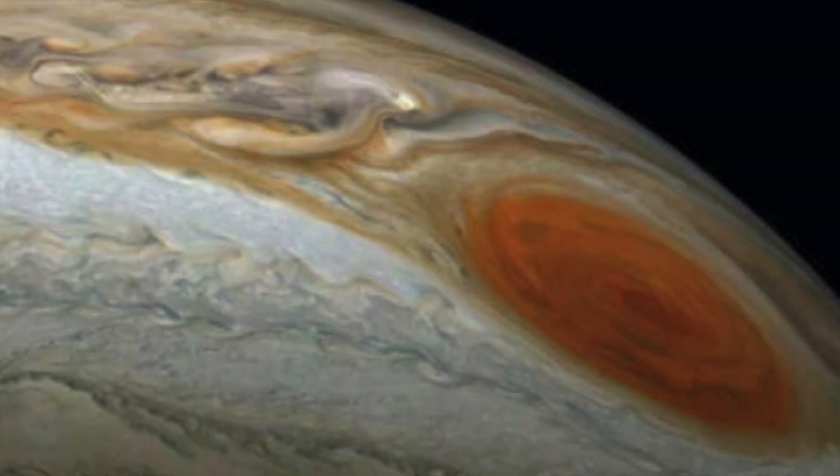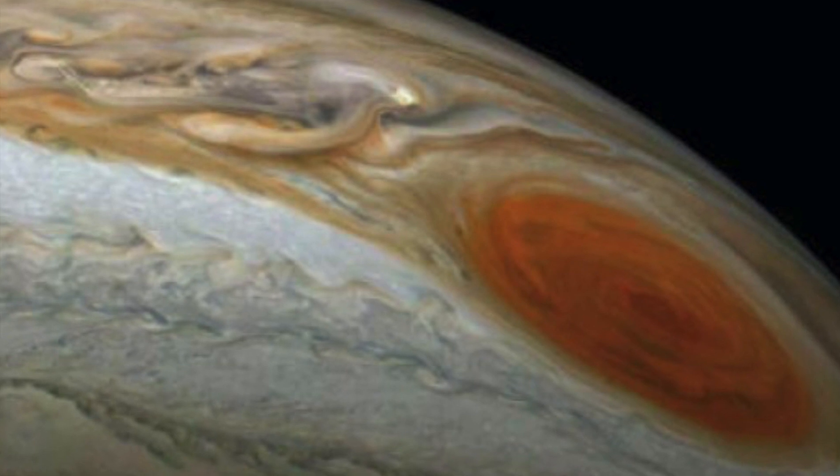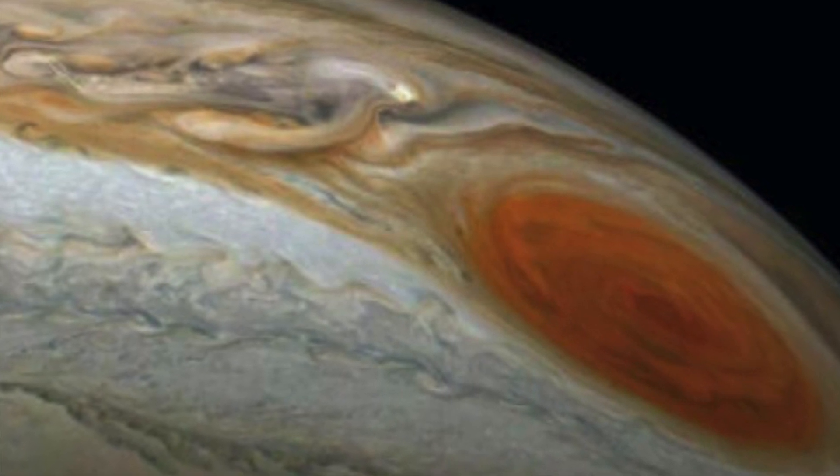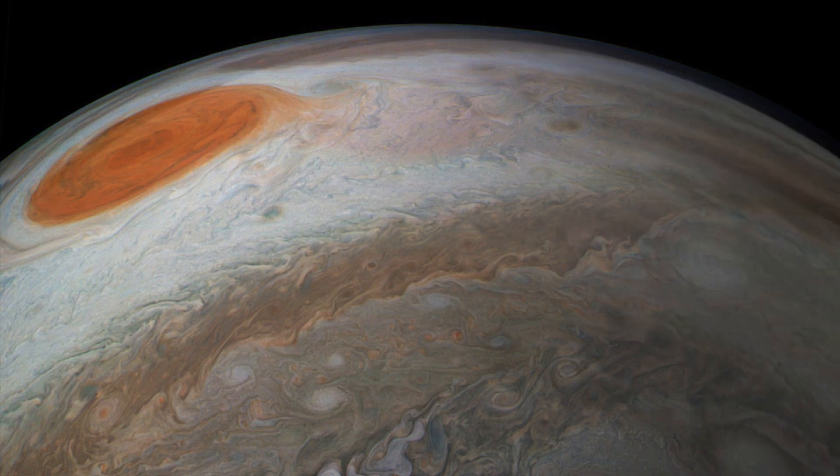This process is what caused the storm to appear to shrink, when it was simply absorbing the forces of the smaller storms to become even stronger. Once the energy has been absorbed from the storm collision, the Great Red Spot would return to its previous size.